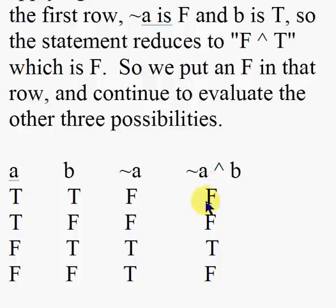In the second row, ~a is false and b is false - false and false is false. Here we have ~a is true and b is true, so true and true is true. And in the last row, ~a is true and b is false, so true and false is false.